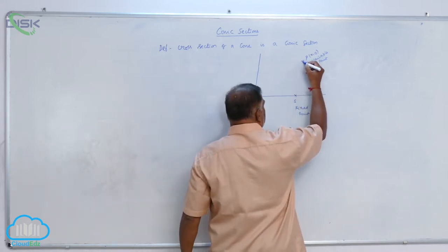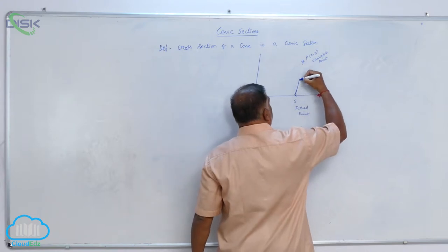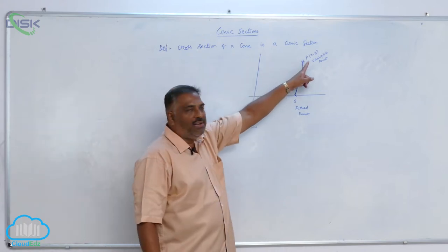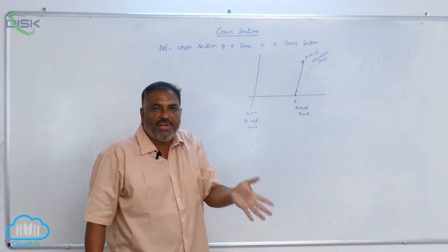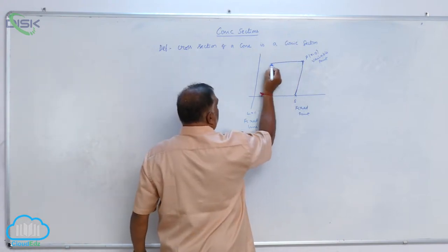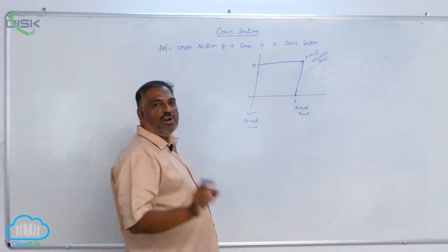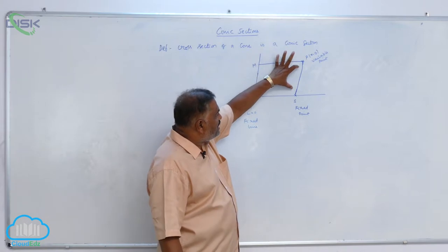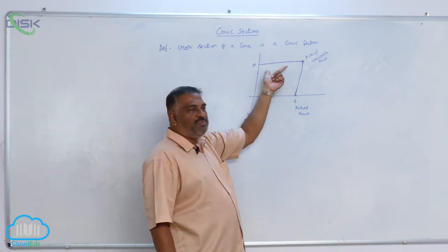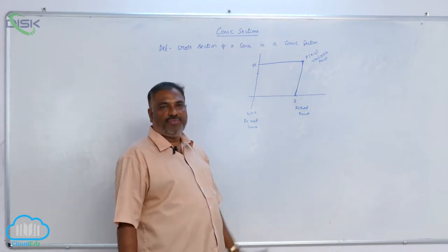Now, join SP. SP is nothing but distance between the two points. Now, from P, draw perpendicular. When you draw perpendicular, it is the perpendicular distance. Let us say this is M. Now, you are able to see two distances. One is SP, distance between the two points. Another one is PM, perpendicular distance from point P to the given line L.